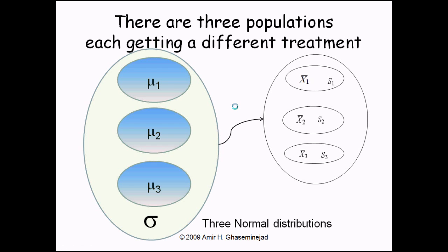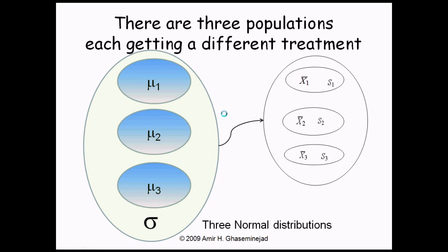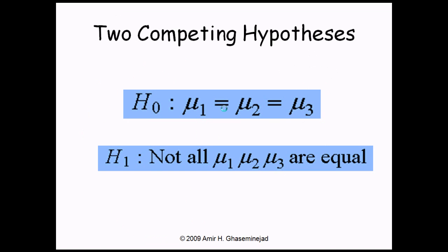We want to know if these different treatments have caused the means of the three populations to be different or not. We have to make this judgment based on three samples taken from these three populations. If we see a big difference in the sample means of the three samples, that would be an indicator that maybe the population means have changed as a result of the treatments. So we have a hypothesis that the differences observed in sample means is the result of sampling variability.